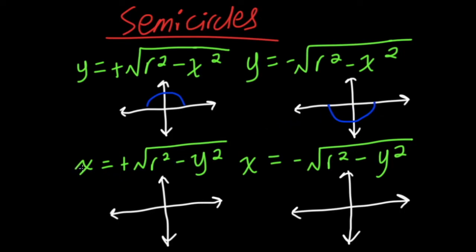This one over here has x as the subject, meaning it will be left or right, and it will be a side semi-circle, instead of up or down. And it is positive, meaning it will be on the positive side. And this one's the same, but it is negative.